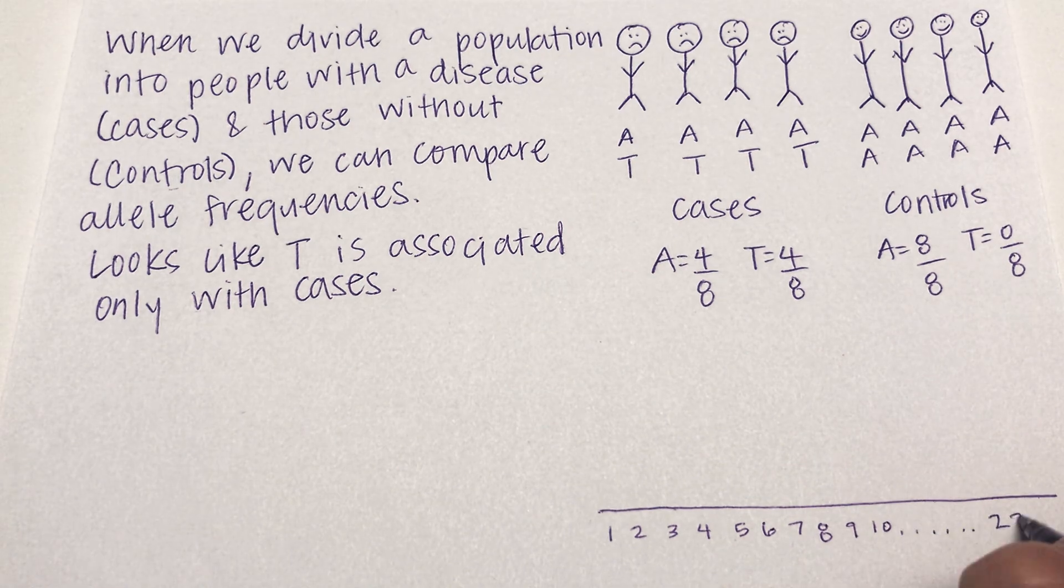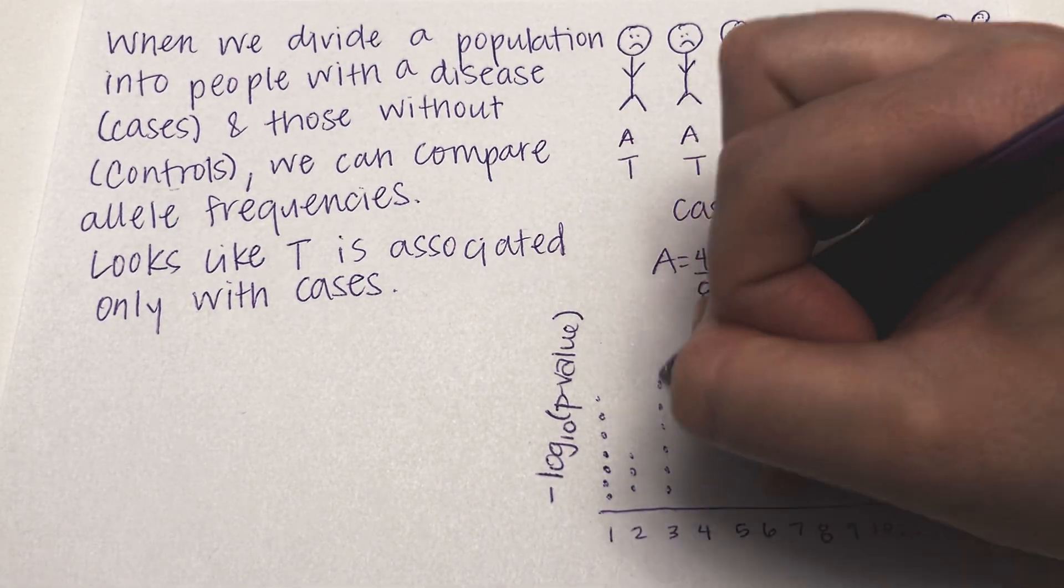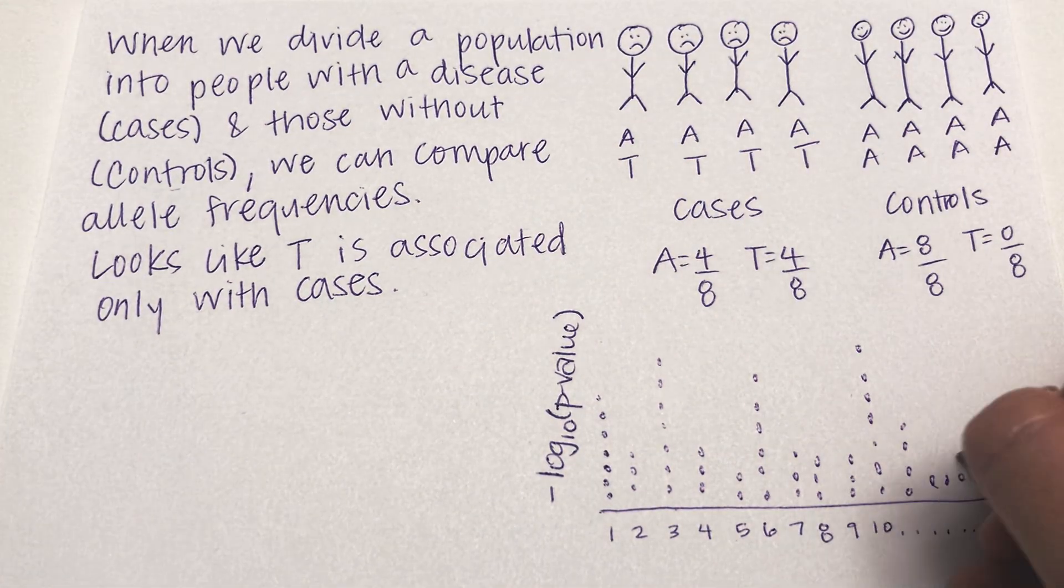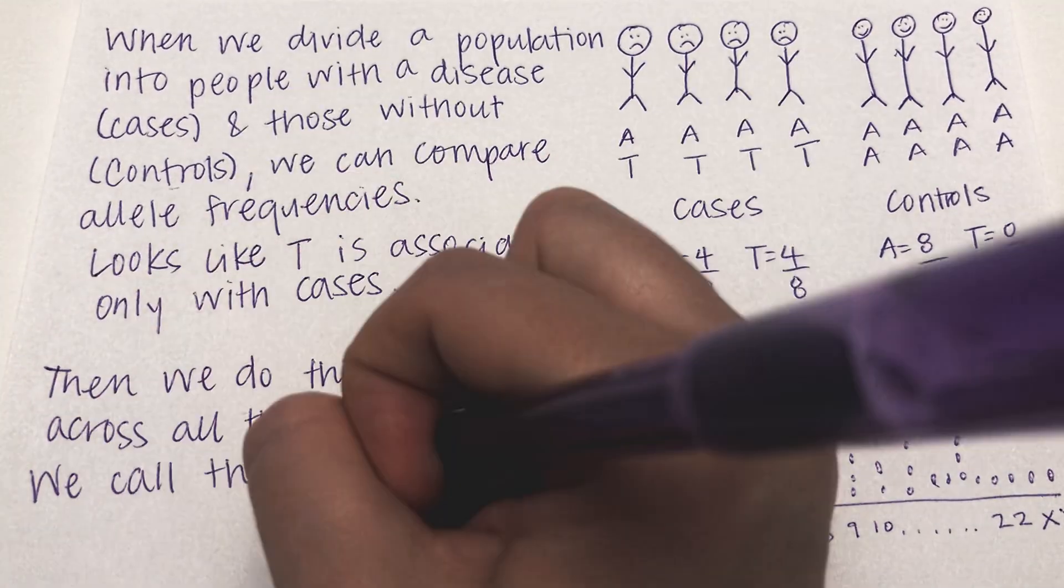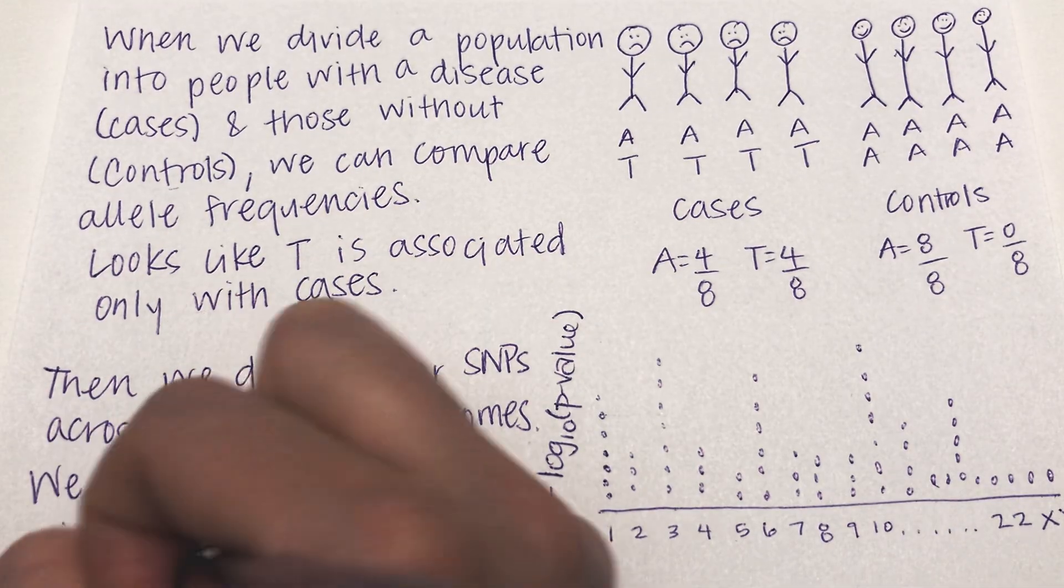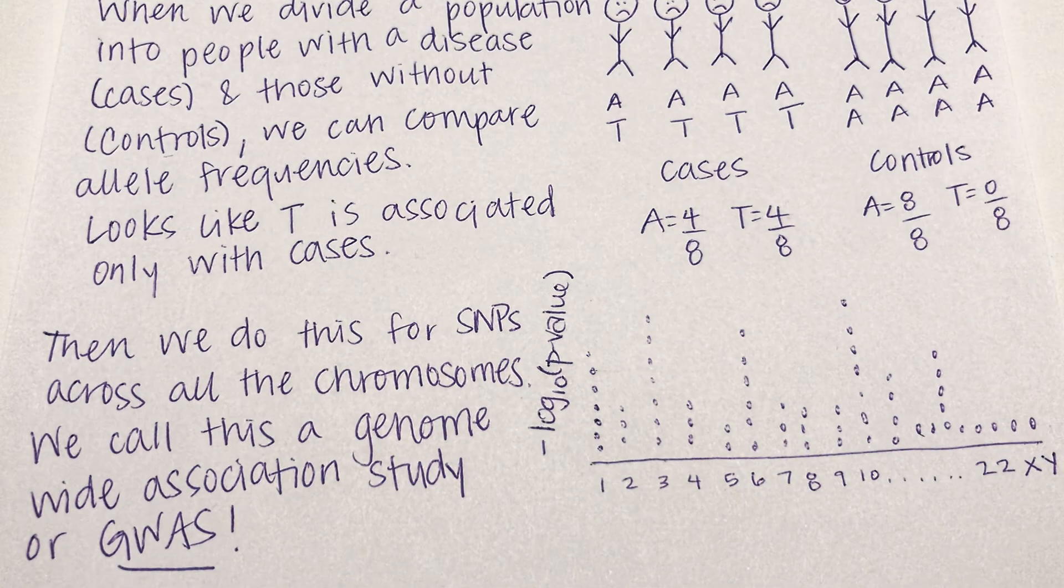Then we do this for all SNPs across all the chromosomes of our genome. We call this a genome-wide association study or GWAS. Here I'm showing the statistical representation of such a study.